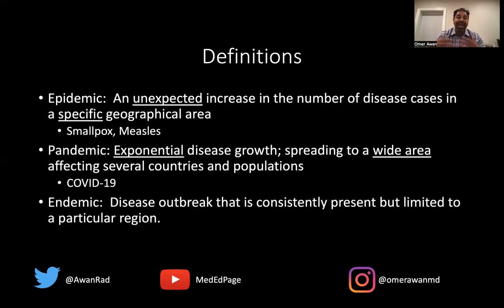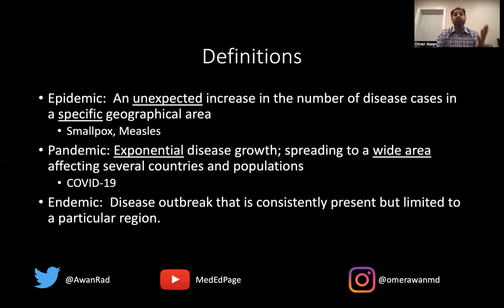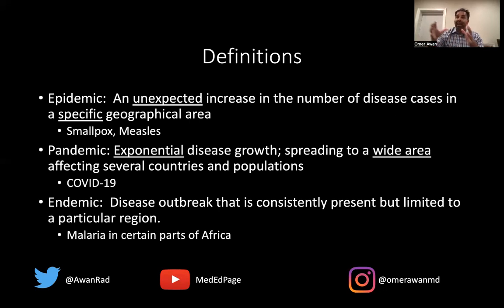When we say endemic, that means a disease outbreak that's consistently present but limited to a particular region. It's different from an epidemic because we expect it to be present — it's not an unexpected increase. It is confined to a particular region, but it's expected to be consistently present. An example of this would be malaria in certain parts of Africa. Malaria is always present and expected in certain areas of Africa — today, a year from now, two years from now. That's endemic to a particular region.